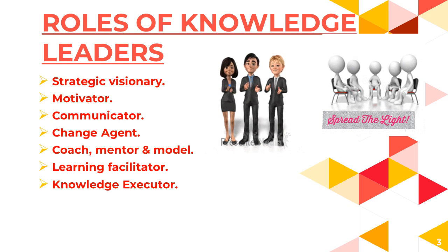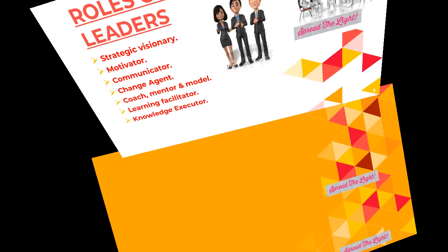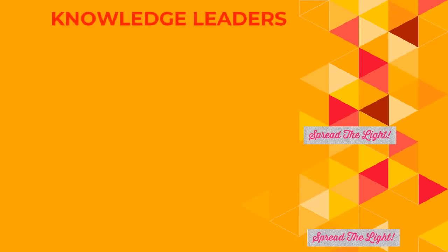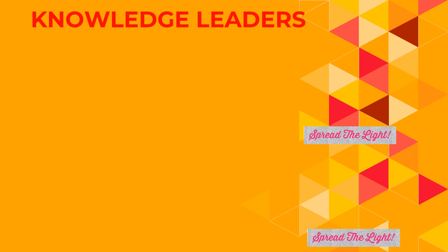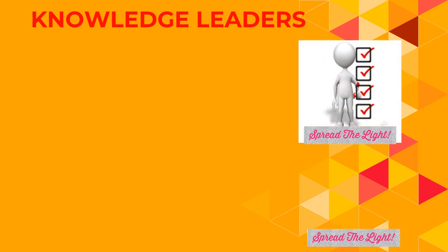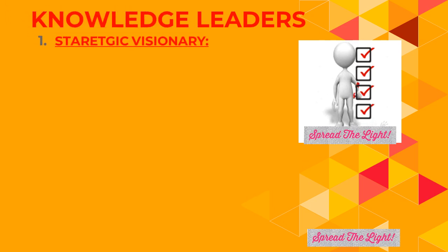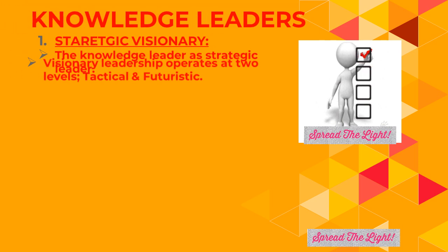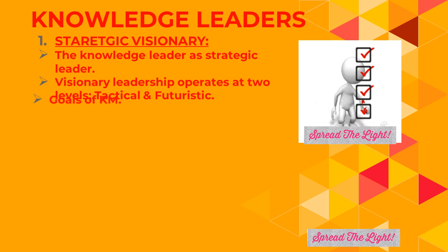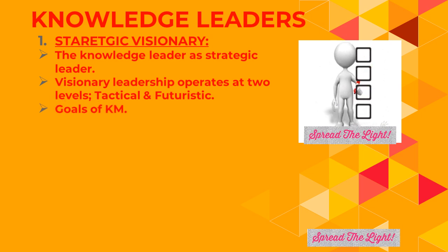Let's explore the types of characteristics knowledge leaders need to demonstrate. Strategic visionary: the knowledge leader's strategic leadership operates from an understanding of core business and how it relates to the value of that organization. Visionary leadership needs to operate at two levels — tactical and futuristic. Knowledge leaders need to explain the goals of knowledge management so that people can identify their roles in achieving those goals.